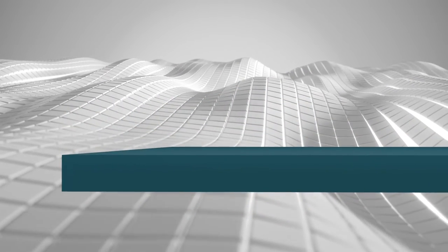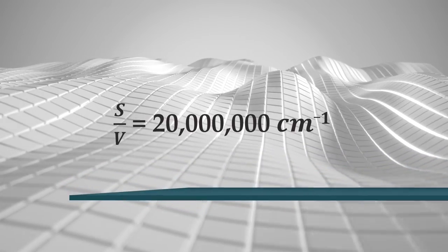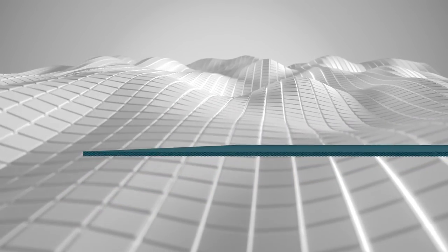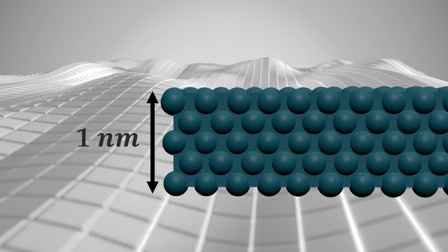If we continue to stretch this sheet until its thickness was at the nanoscale, its surface-to-volume ratio would continue to skyrocket, meaning most of the material is on the surface with very little volume.